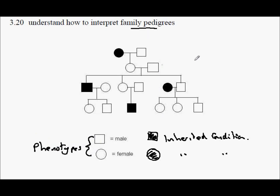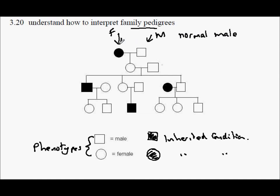Let's take a look at our diagram. On the horizontal we have a female and a male. The female's circle is filled in, indicating she already has some condition, while the male square is open — we would describe that as a normal male. So the female is an affected female.